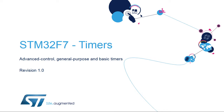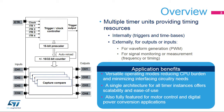Hello, and welcome to this presentation on the Advanced Control General Purpose and Basic Timers Embedded in STM32F7 Microcontrollers. It covers their main features, which are useful for handling any timing-related events, generating waveforms, and measuring the timing characteristics of input signals. The STM32 embeds multiple timers, providing timing resources for software or hardware tasks. The software tasks mainly consist of providing time bases, timeout event generation, and time triggers.